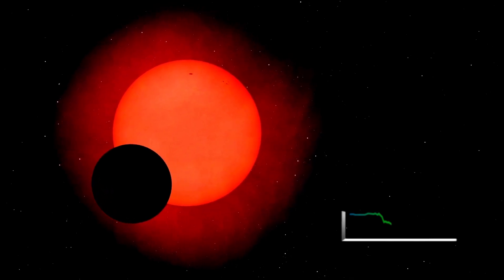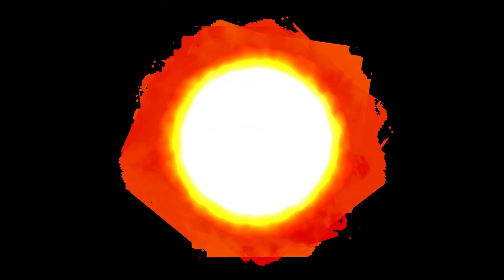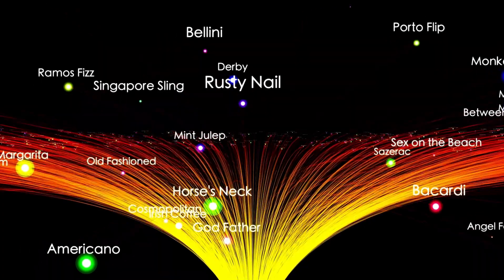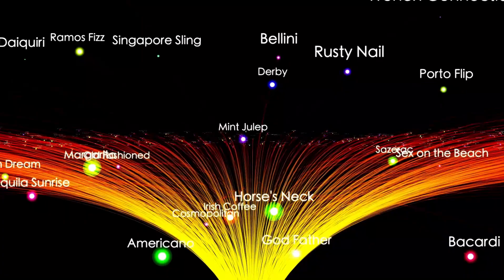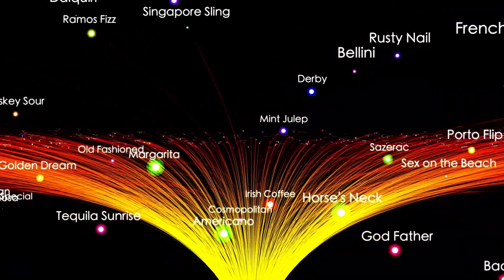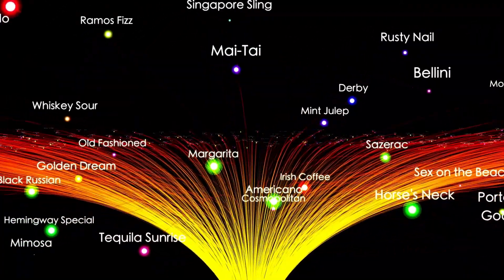Betelgeuse, for example, has a radius of about 1000 times that of the Sun, while Antares has a radius of about 700 times that of the Sun. Mu Cephei, on the other hand, is even larger, with a radius of about 1650 times that of the Sun.